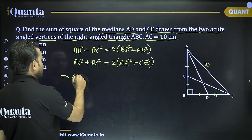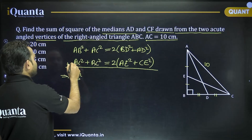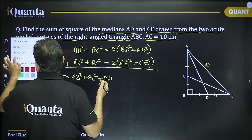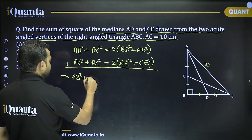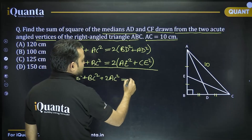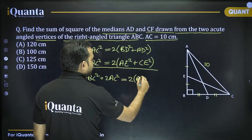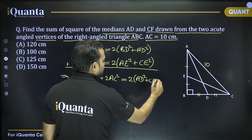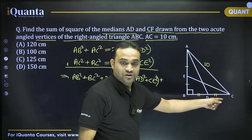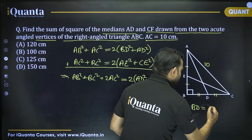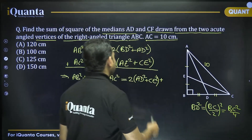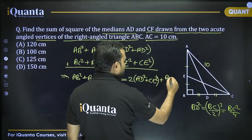Adding these two equations: AB² + AC² + AC² + BC² = 2(AD² + CE²) + 2BD² + 2AE². Now BD = BC/2, so 2BD² = BC²/2, and AE = AB/2, so 2AE² = AB²/2.